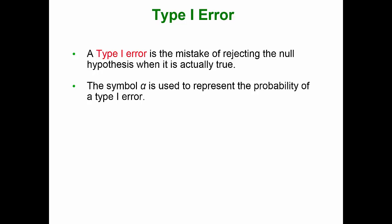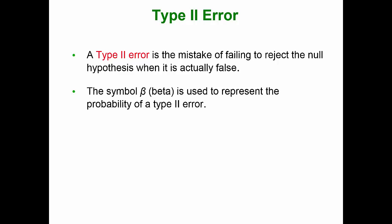A type 1 error is the mistake of rejecting the null hypothesis when it is actually true. The symbol alpha is used to represent the probability of a type 1 error. A type 2 error is the mistake of failing to reject the null hypothesis when it is actually false. The symbol beta is used to represent the probability of a type 2 error.